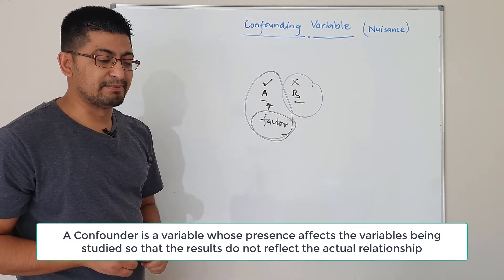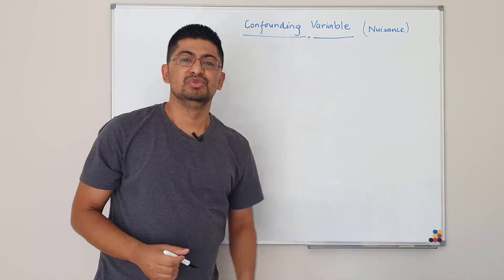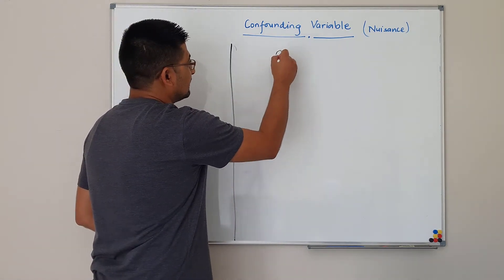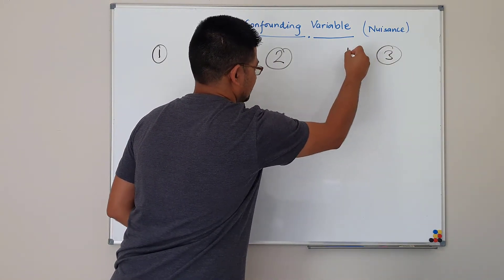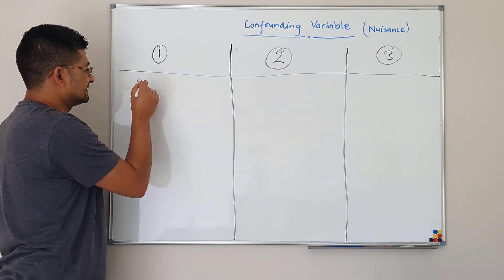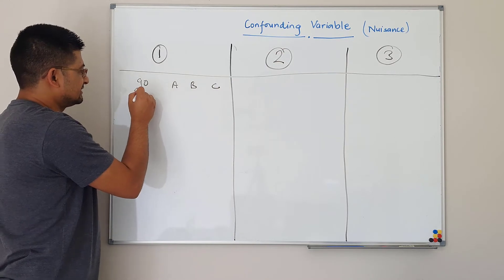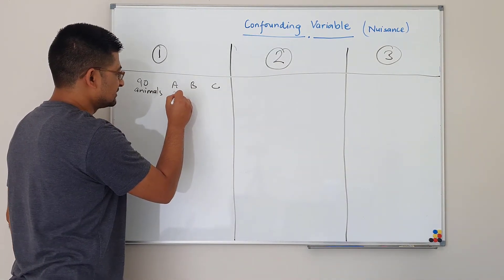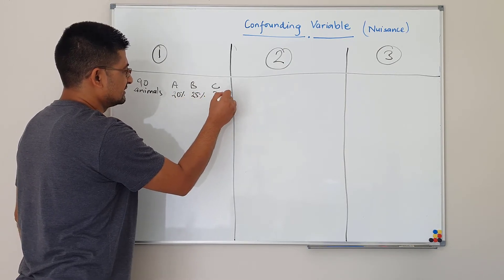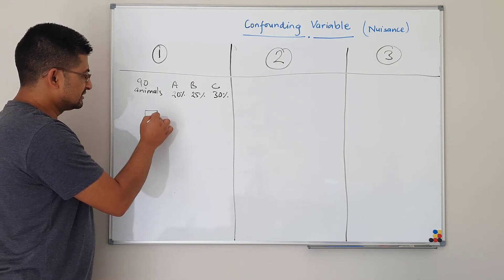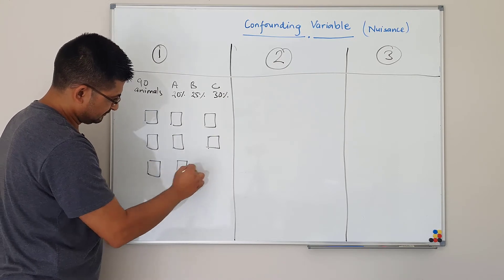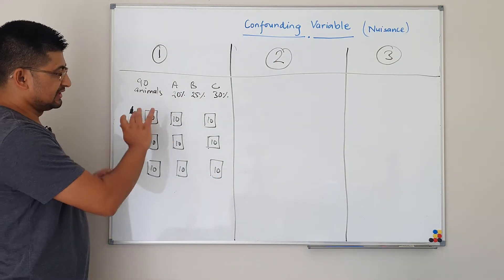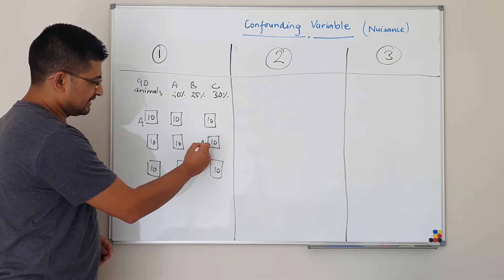Let me give you three examples and show you how to manage confounding variables. In example one, let's say you have 90 animals and three treatments A, B, and C. You want to see the effect of protein on the growth of those animals — 20%, 25%, and 30% protein. You have nine rooms and each room has 10 animals. You randomly allocate treatments across the rooms.